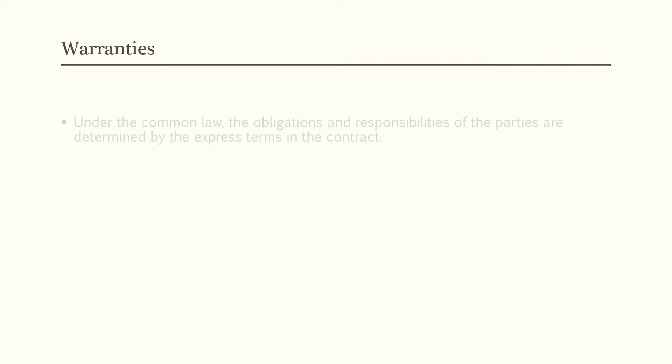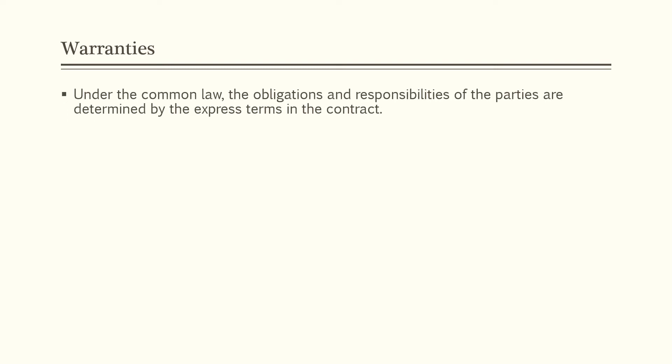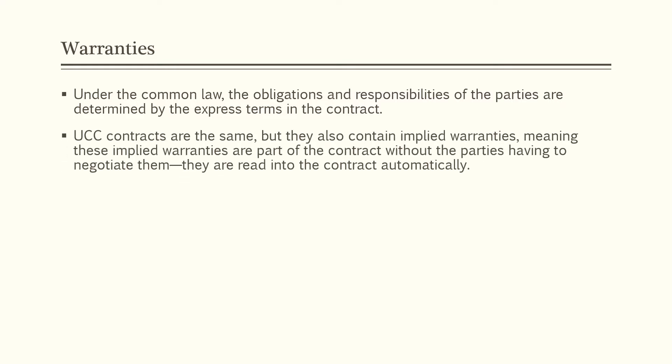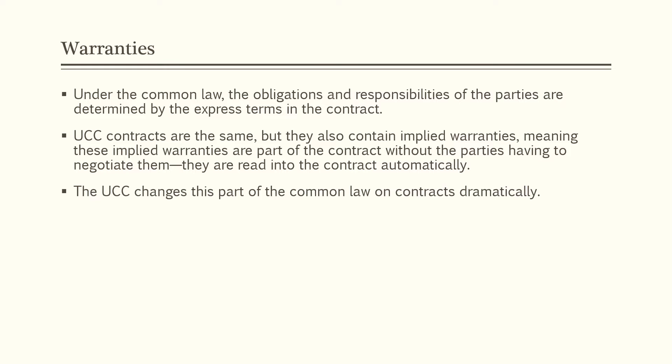Next we'll turn our attention to warranties. Under the common law, obligations are determined by express terms in the contract, and the only implied warranty is the implied warranty of assignability. Under common law, if a party's product fails to live up to its warranties, express or implied, the party can be sued for breach of warranty. UCC contracts also contain more implied warranties — these are read into the contract automatically without the parties having to negotiate them. The UCC changes this part of common law dramatically.